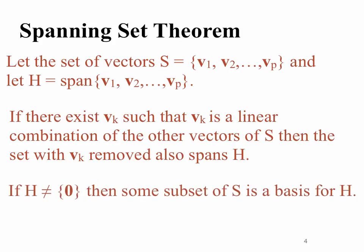So the second part to the theorem says if H is not equal to zero, then some subset of S is a basis for H. So that means if I took out vectors that were linear combinations of the others in the set and the ones that were left over still span the set, then somewhere in there is a basis for that actual subset or subspace H.